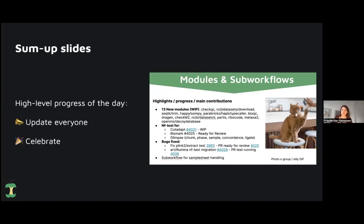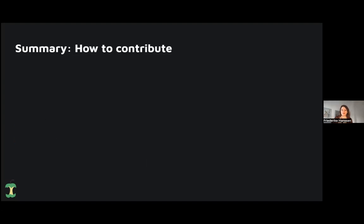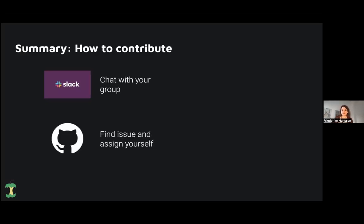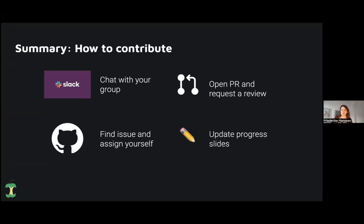Throughout the hackathon day, your topic leaders will ask you to fill out some progress slides. At the end of each day, we have slides giving a high-level overview of what happened — which modules were worked on, highlights like nf-test discussions, or new subworkflows added. This updates everyone and lets us celebrate our achievements. To sum up how to contribute: go on Slack, chat with your group, find an issue, assign yourself, and start working. Open a PR, request a review, and while waiting, review one back. Update the progress slides, and don't forget to celebrate — get coffee, get snacks, take a walk, then start over.